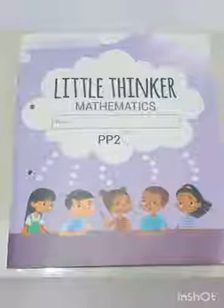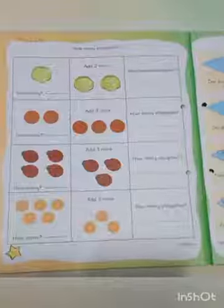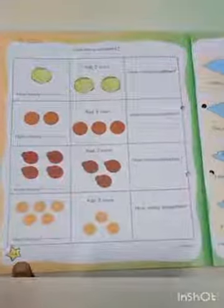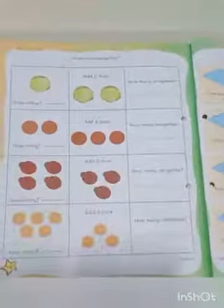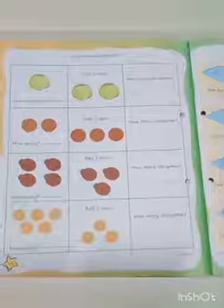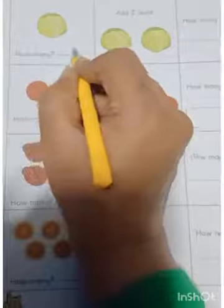Now it's time to practice! Let's take out our Little Thinker Math book. We will practice our addition on page number 64. In the left-side corner, write today's date. Children, count how many cabbages are here — one. So children, write number one here.